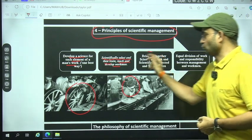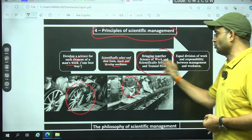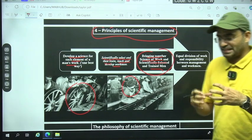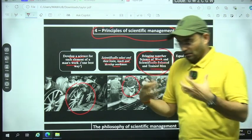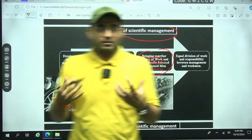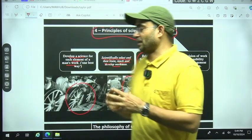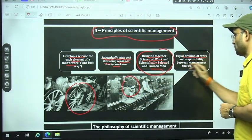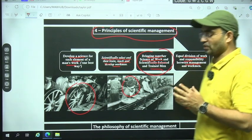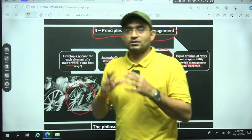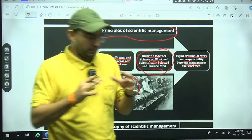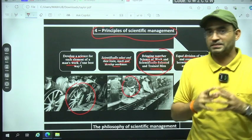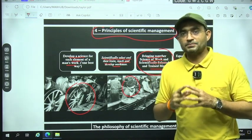Then Taylor says bring both together, bring together science of work and scientifically selected man. So what will happen? The problems that were coming earlier will be sorted out and finally our production will increase. And lastly he says equal division of work and responsibility between management and workmen. Earlier, it was the responsibility of worker to produce the products. Management had no responsibility. So in this way Taylor presents scientific management with four principles.